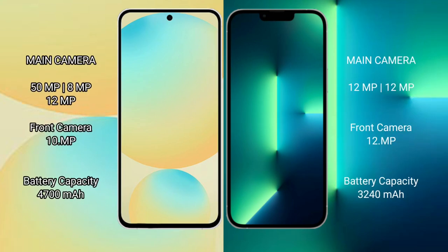Samsung Galaxy S24 FE has a triple rear camera setup: 50MP main, 8MP ultrawide, and 12MP telephoto. Front camera is 10MP. iPhone 13 has a dual rear camera setup: 12MP main plus 12MP ultrawide. Front camera is 12MP.